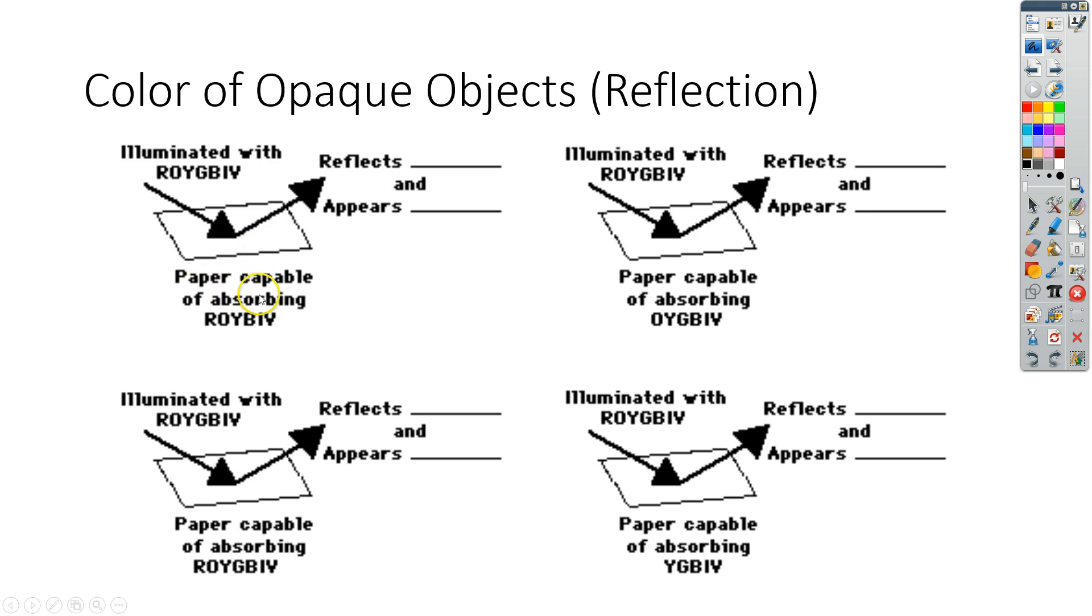And this paper is capable of only absorbing red, orange, yellow, blue, indigo, and violet. So essentially it's pretty simple. What you have to figure out is which one of the colors is it going to reflect.